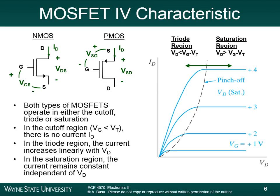These are the MOSFET IV characteristics. There's a triode region — when you apply a small drain voltage, the characteristic is sort of linear. Initially when you turn the device on with a certain gate voltage, this looks like a resistor. There is a linear characteristic between the drain voltage and the drain current. However, if you apply large VDS, eventually the current is going to saturate — it gets to some value and then it can't go any higher.